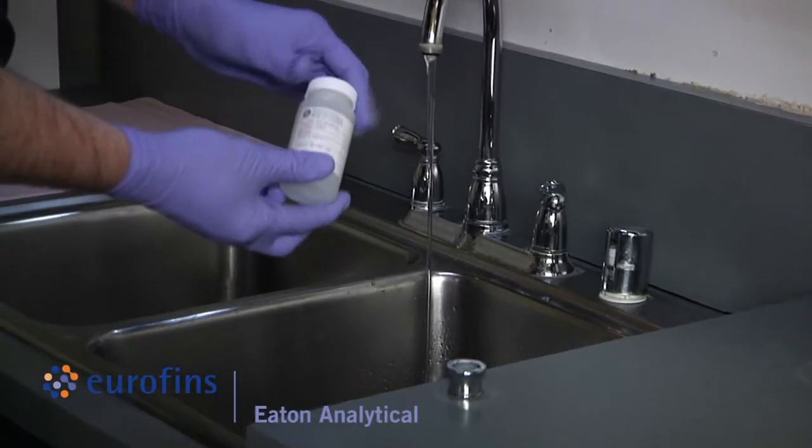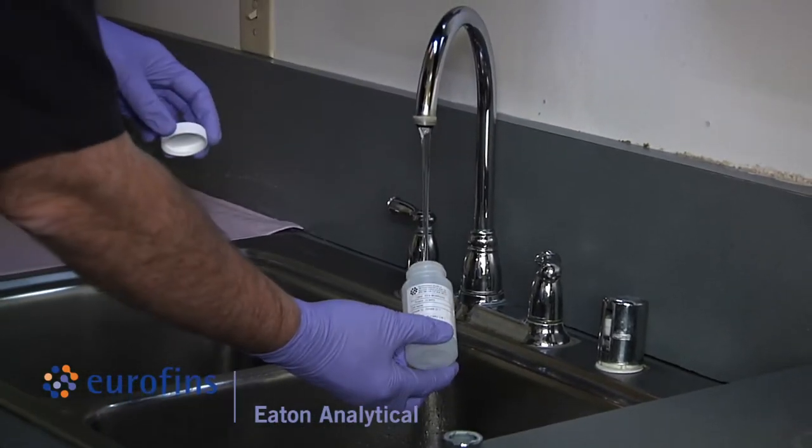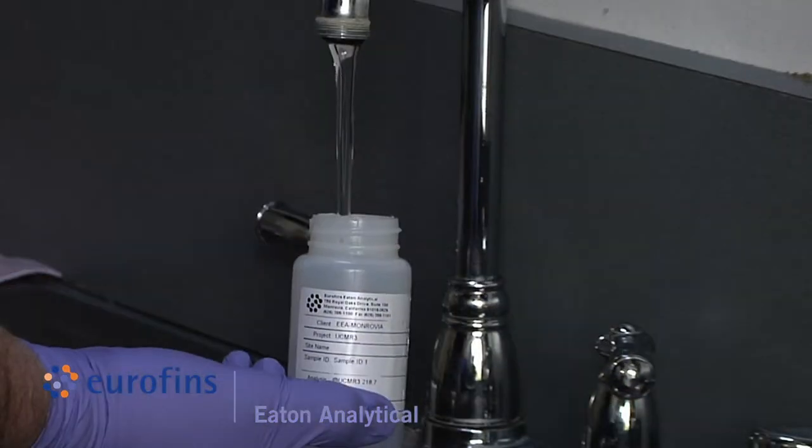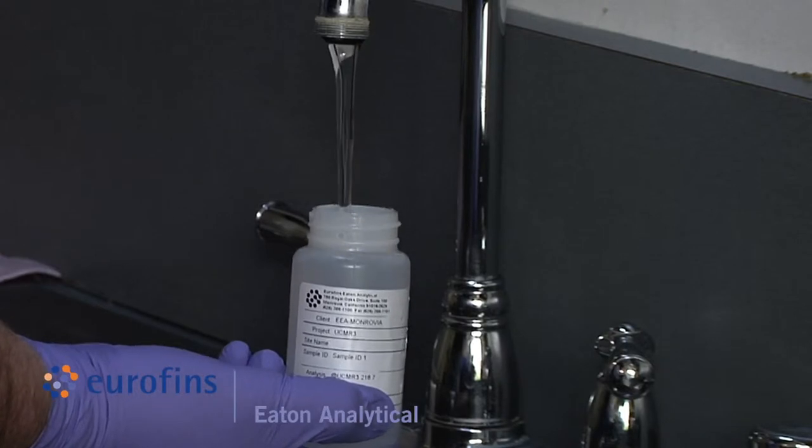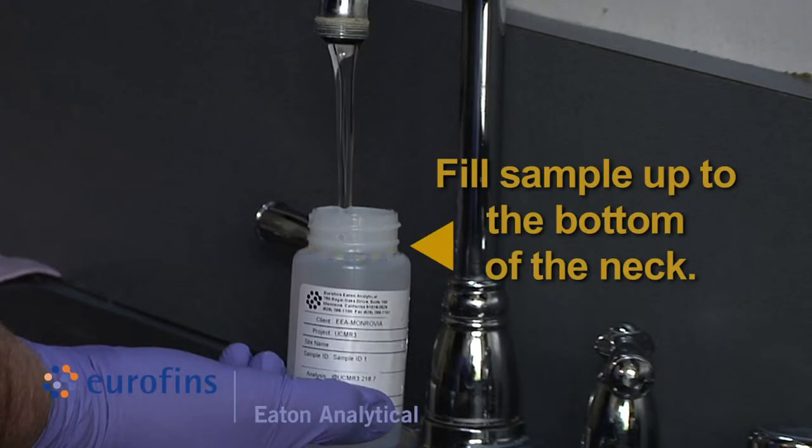Start sample collection by filling the sample bottle up to the bottom of the neck, taking care not to flush out preservatives, and making sure the mouth of the bottle does not come in contact with anything other than sample water.